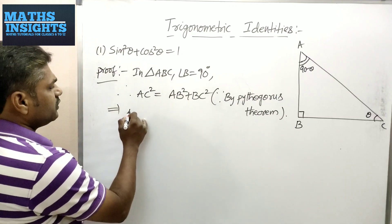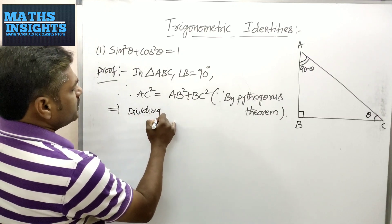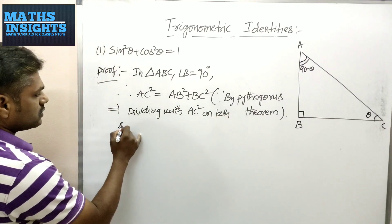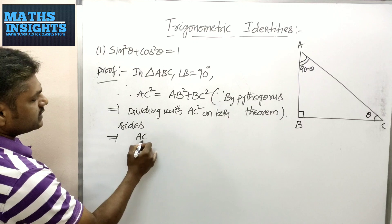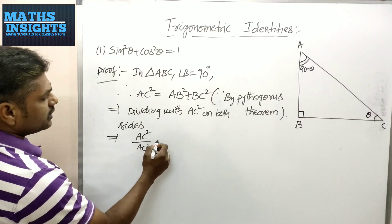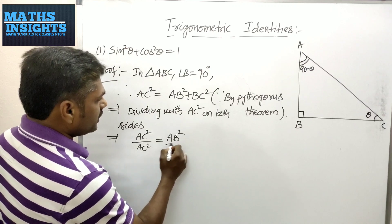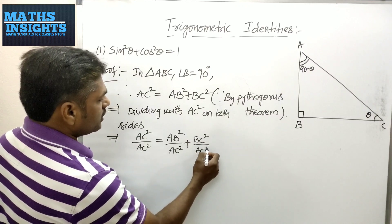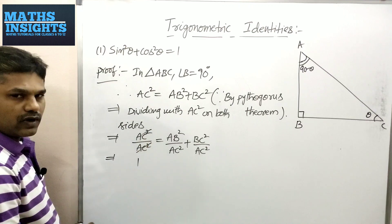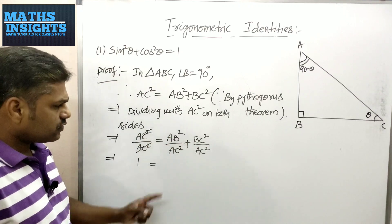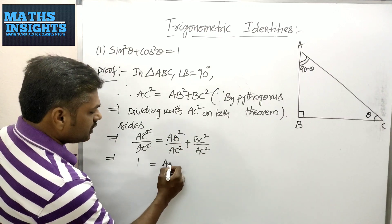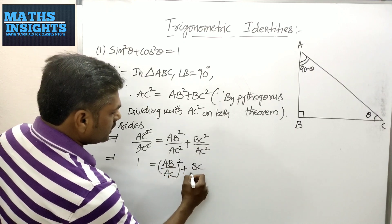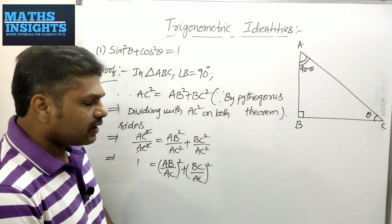Now, in this equation I will divide both sides by AC². Dividing both sides by AC², we get: AC²/AC² = AB²/AC² + BC²/AC². Cancelling on the left side gives 1. I will write square commonly for both numerator and denominator, so it becomes: 1 = (AB/AC)² + (BC/AC)².